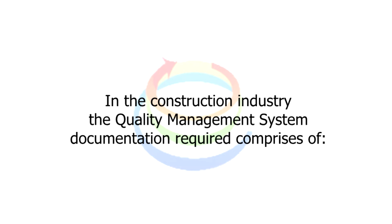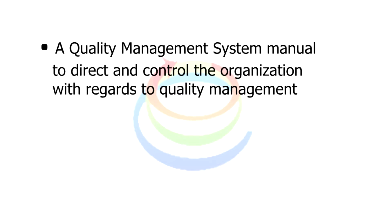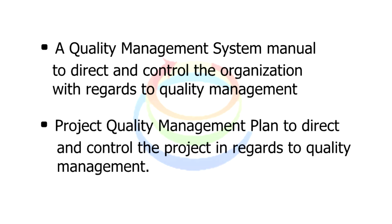In the construction industry, the Quality Management System documentation required comprises of: a Quality Management System manual to direct and control the organization with regards to quality management, and a project quality management plan to direct and control the project in regards to quality management.